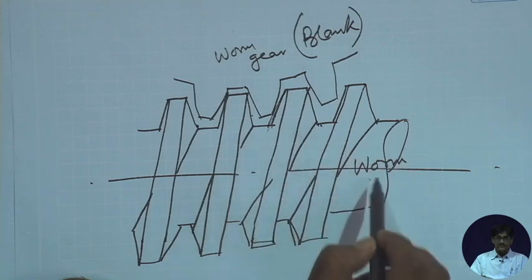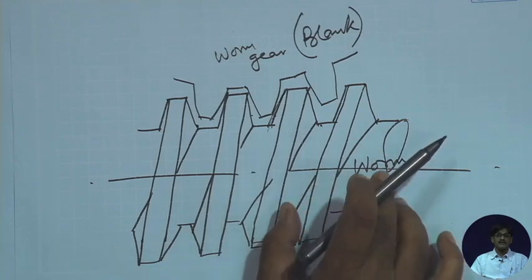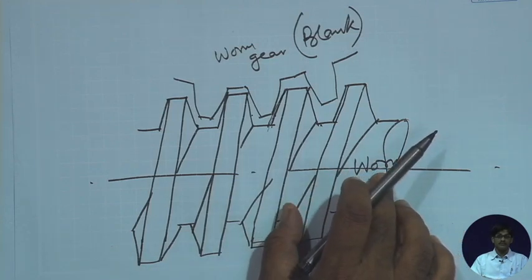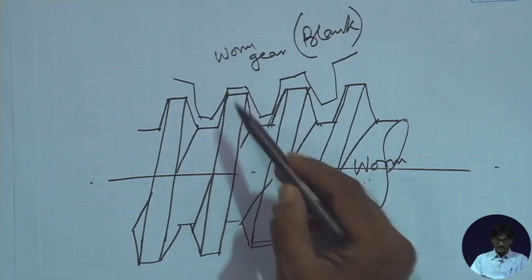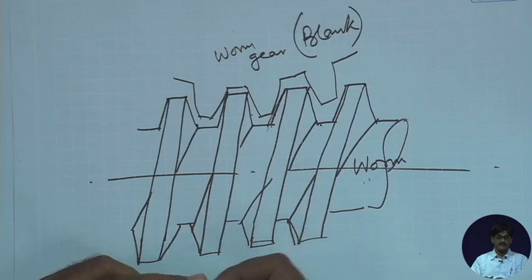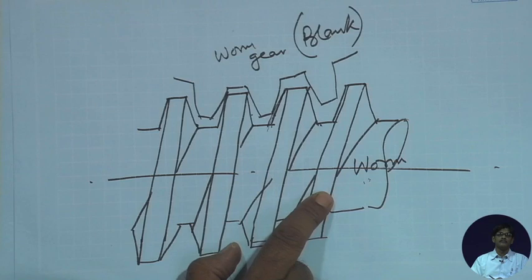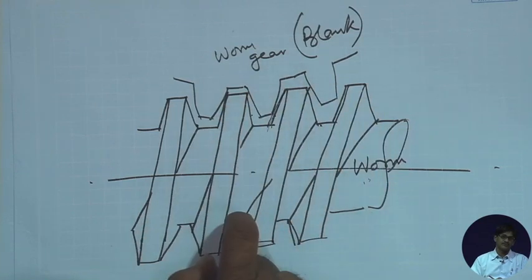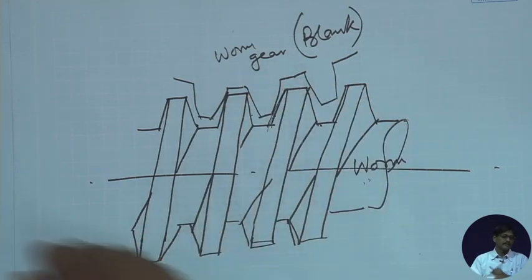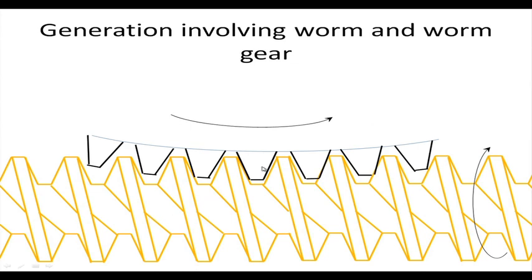The only thing left is to bestow cutting ability upon this worm, because ordinarily this screw thread has no cutting edges — it cannot cut like a milling cutter. So I have to make it a cutter. A worm with cutting edges is called a hob, and the process that follows is called gear hobbing.